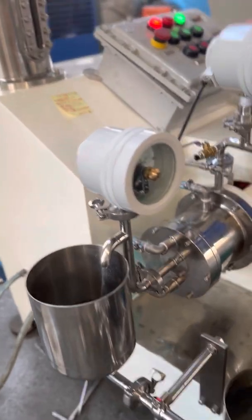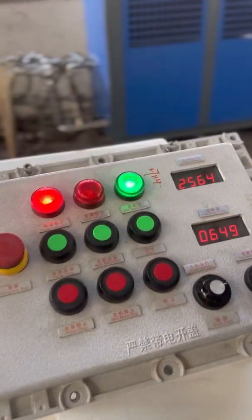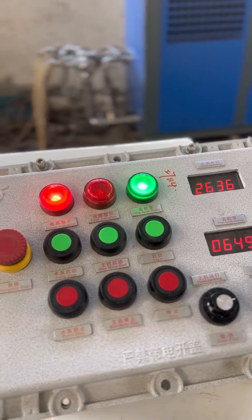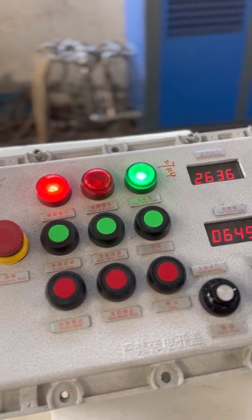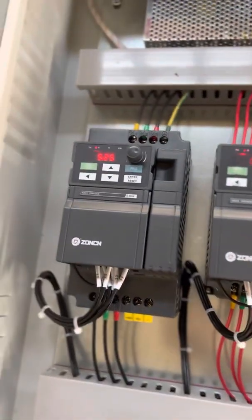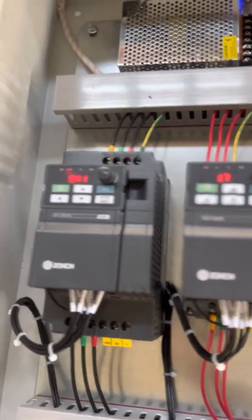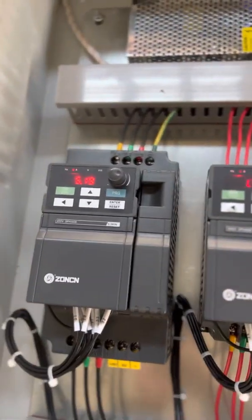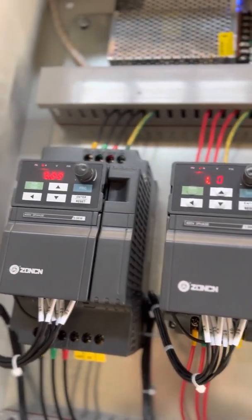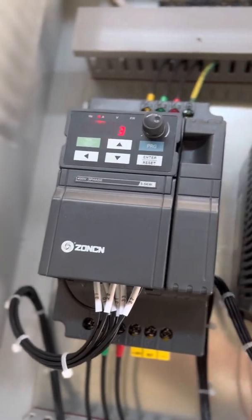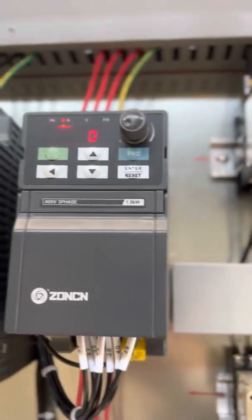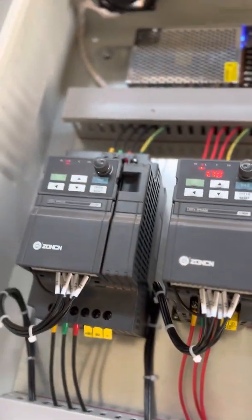And this one is the pump speed. We can adjust it to 3000 rpm here. And this is the frequency inverter. You can see the current on the panel.